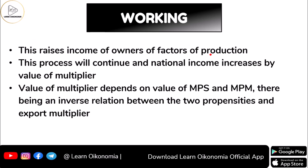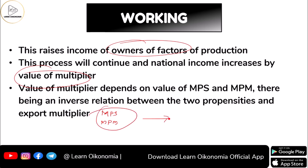Whenever producers demand more factors of production, the owners of those factors get increasing income, and the process definitely continues — it is a chain process. National income would increase, and how much it increases is determined by the value of the multiplier, which depends upon the marginal propensity to save and the marginal propensity to import, with an inverse relationship.